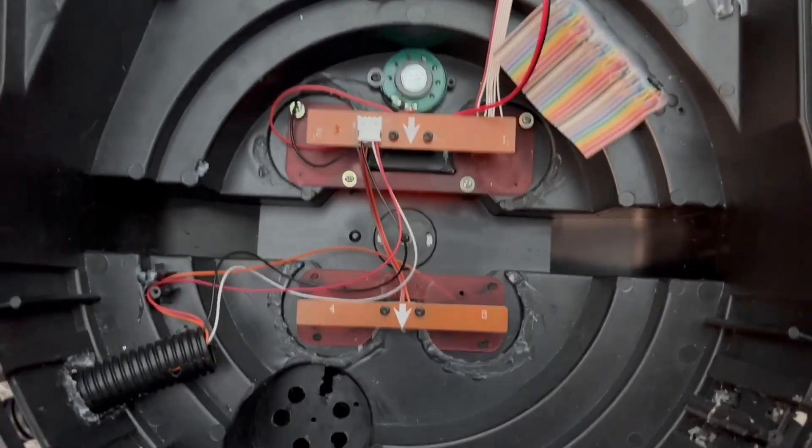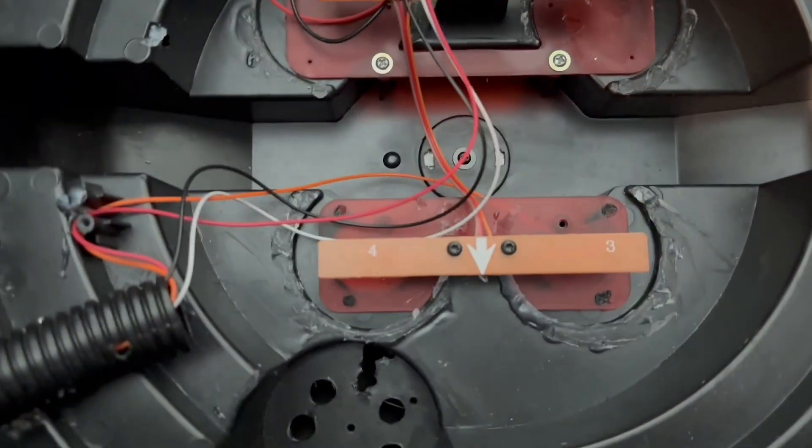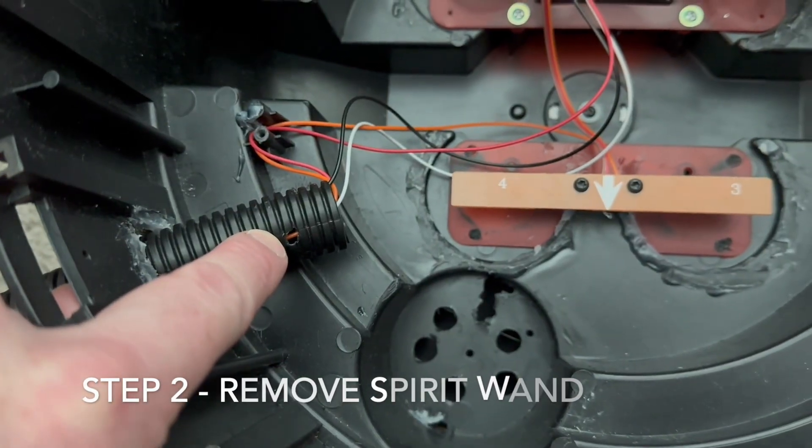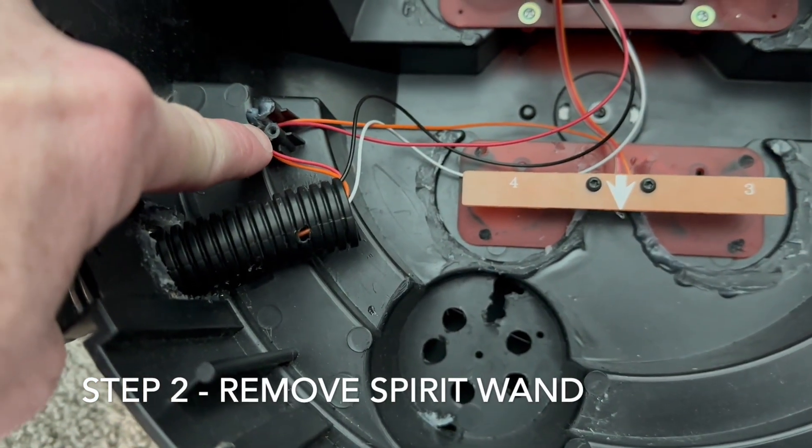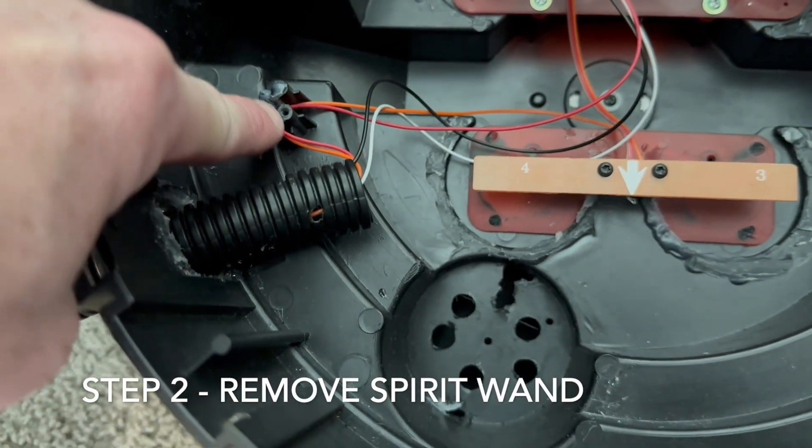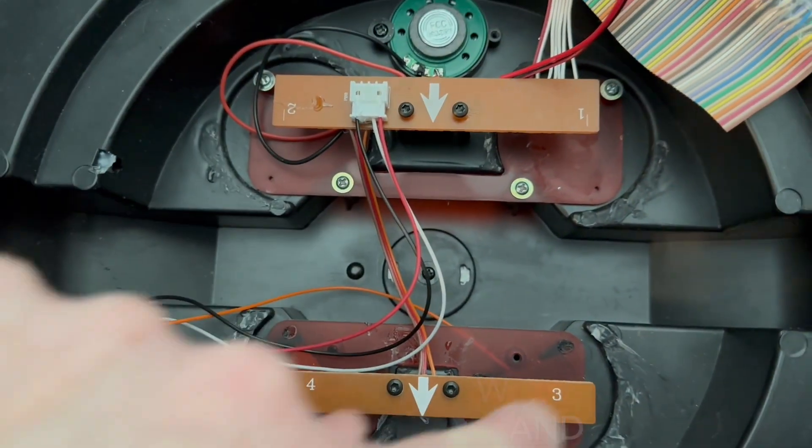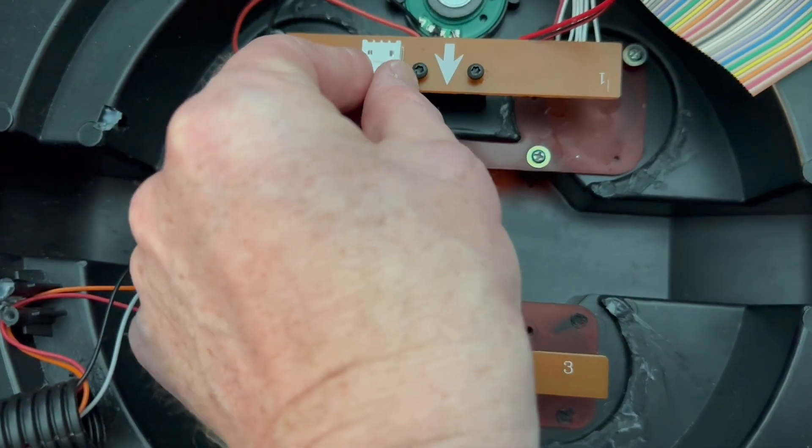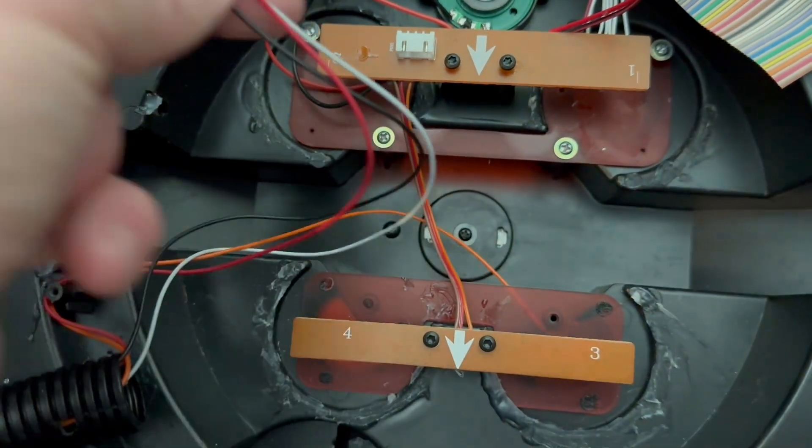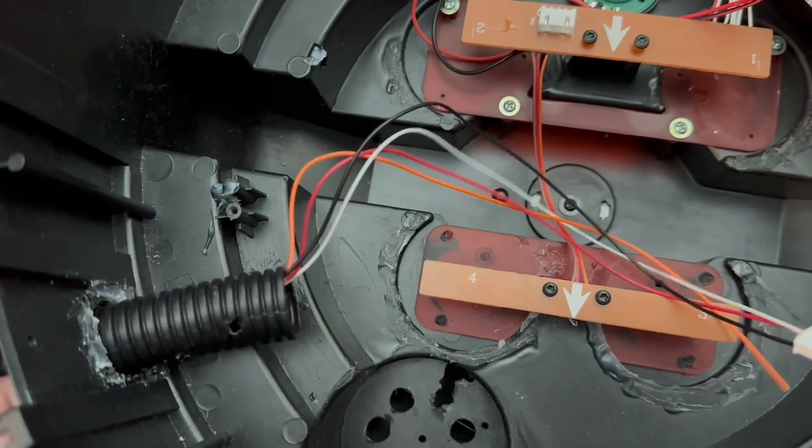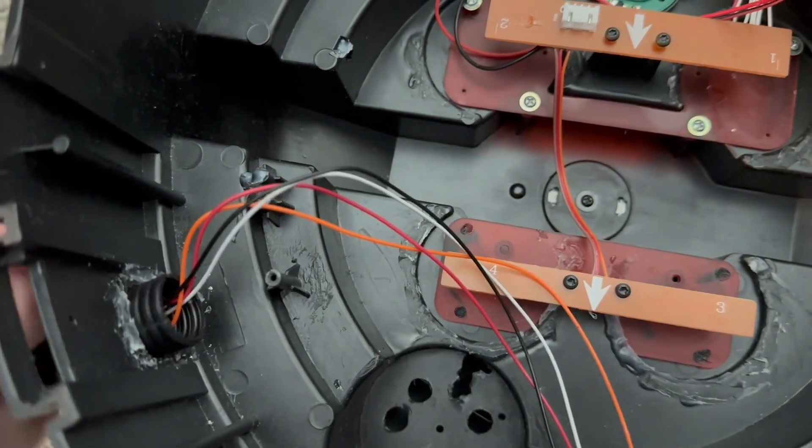Once you've got the pack open, you will unscrew the factory hose for the factory wand and the screw for the factory wiring. There will be some hot glue you have to scrape off. This is the factory electronics. You will remove the 4-pin connector for the factory wand. Now you should be able to detach and remove the factory wand.